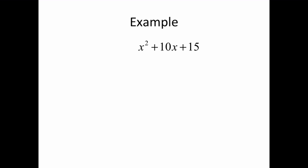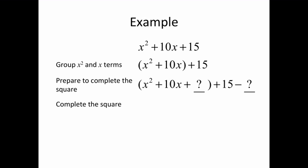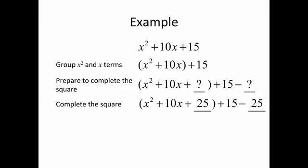Let's take a look at another example. We'll go through exactly the same process — I'll illustrate all of the steps. First, we're going to group the x squared and x terms using parentheses. Next, we're going to prepare to complete the square by leaving that empty space within the parentheses, and then an empty space outside to indicate that we've taken away a number of units. We're going to complete the square by taking half of 10 and squaring it — that's 5 squared, which is 25. We're going to need 25 units here, so we're going to add 25 inside and take out 25 outside.